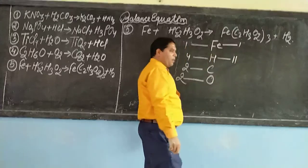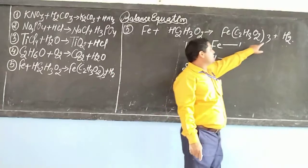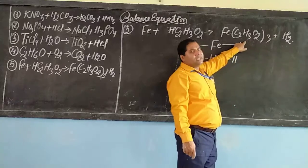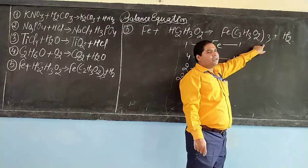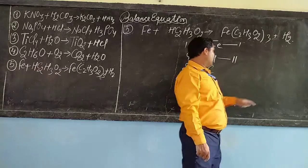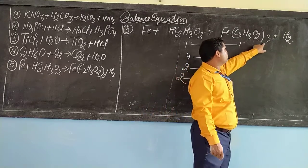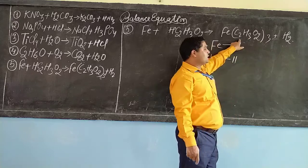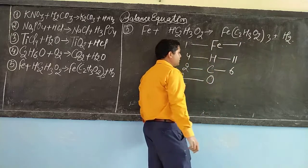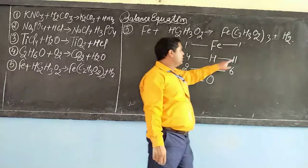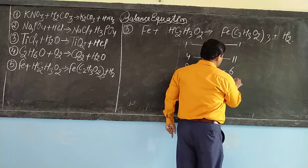Number of atoms of carbon: 3 into 2 = 6. Number of atoms of carbon is 6. And oxygen: 3 into 2 = 6.